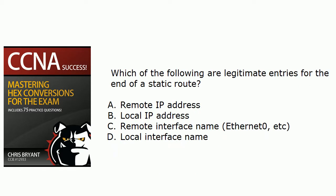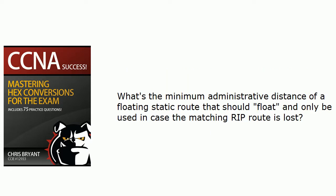Let's jump into the first question: which of these are legitimate entries for the end of a static route? This is a situation where the router might not let you do something, but the exam might ask on a multiple choice question. Can we put the remote IP, the local IP, the remote interface name, or the local interface name at the end of a static route command? As always, my questions are the dreaded 'select all that apply.'